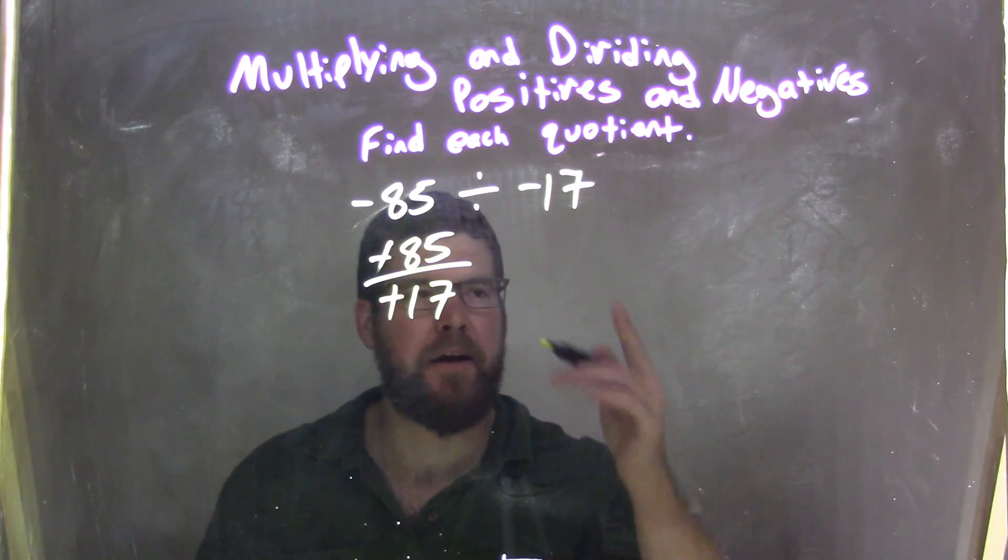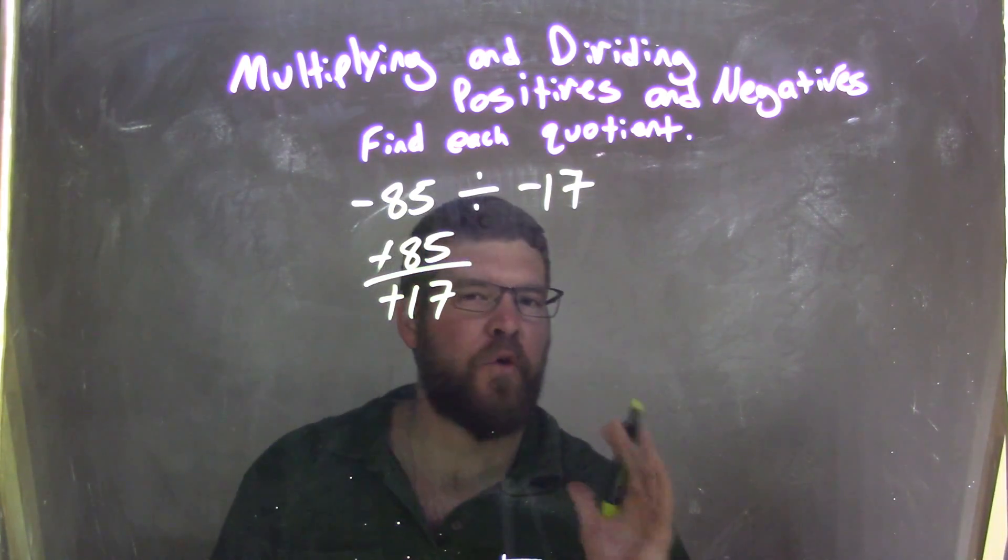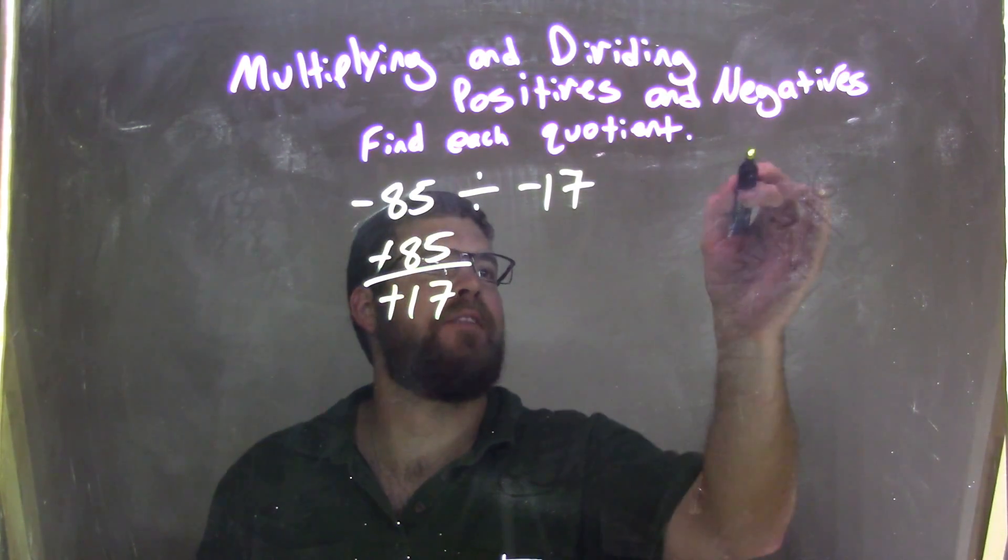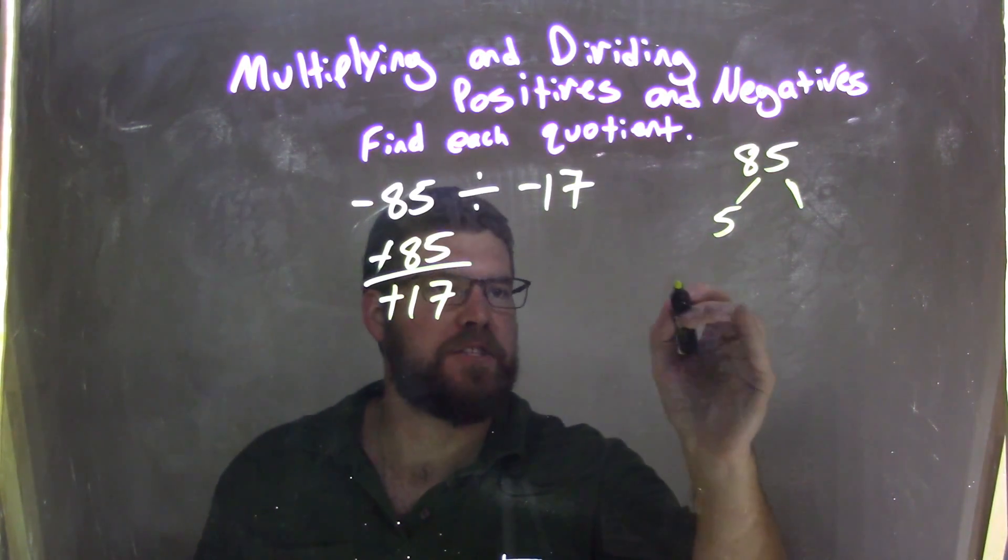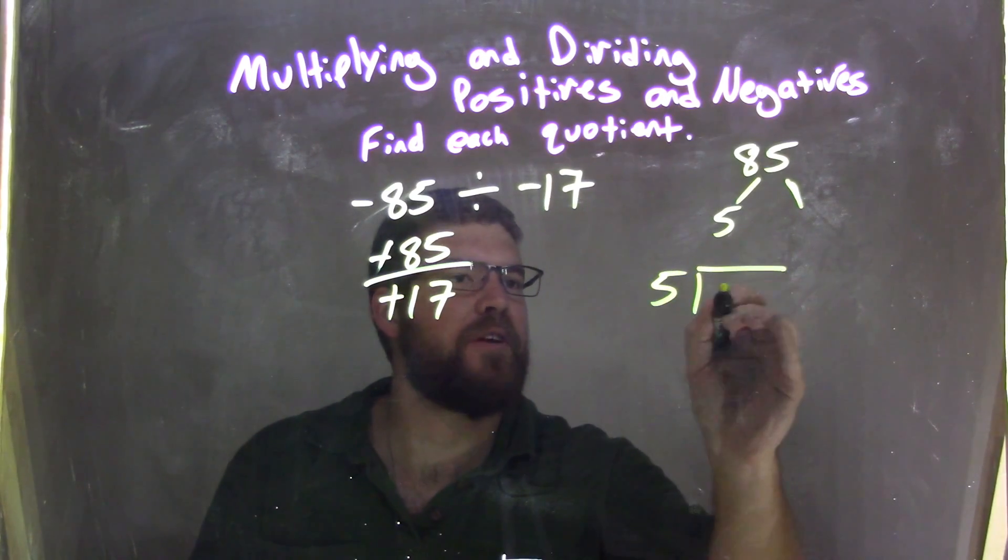Well, 17's prime, can't break it down. 85, I know 5 goes into 85, but I don't know how many times, so I'm going to do some long division here. 5 goes into 85.